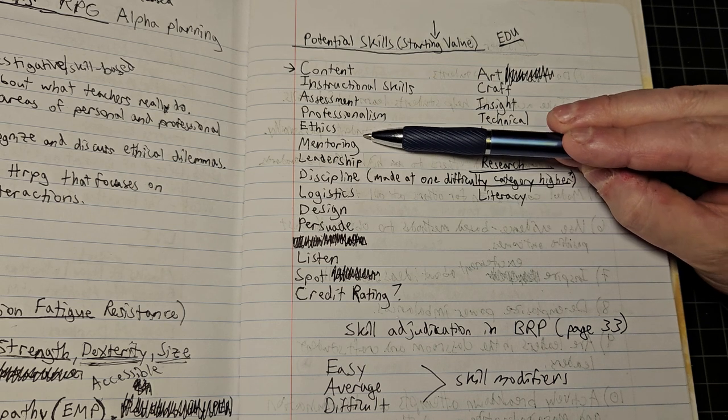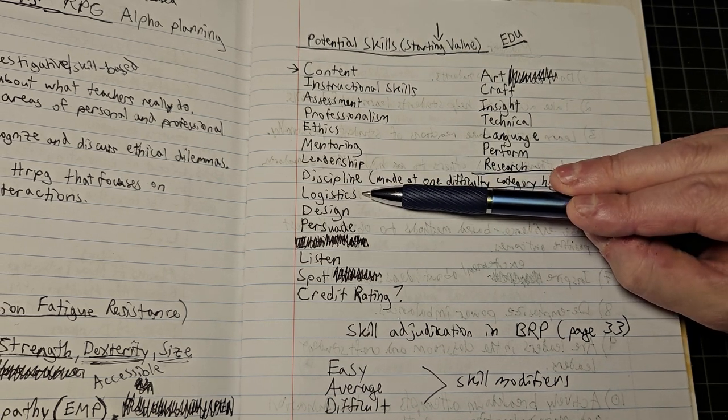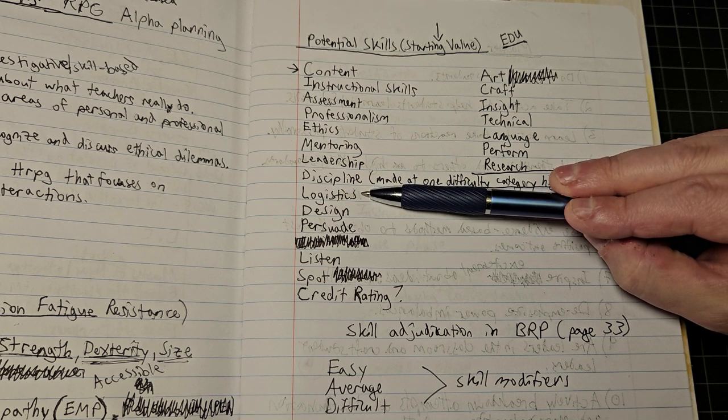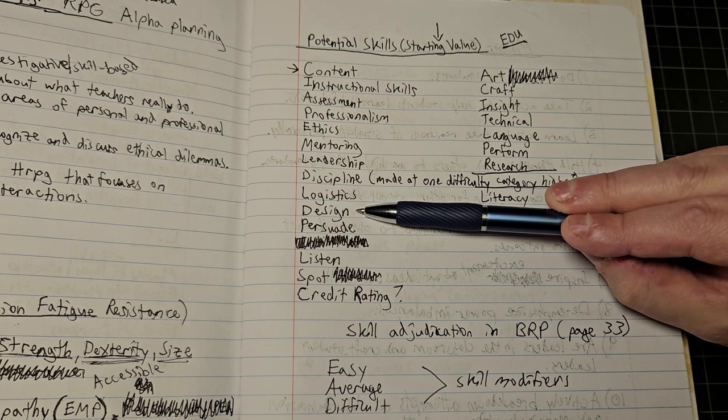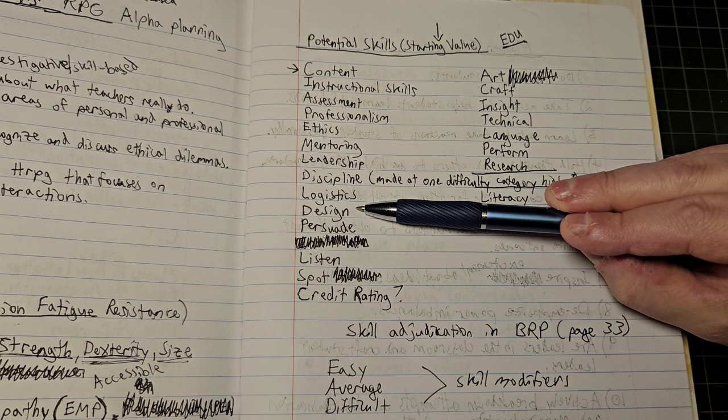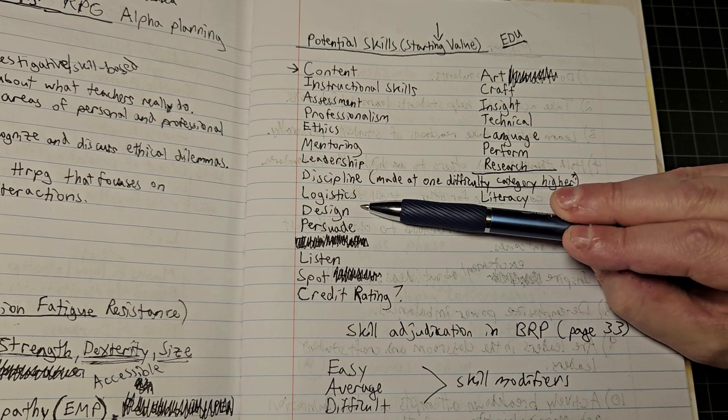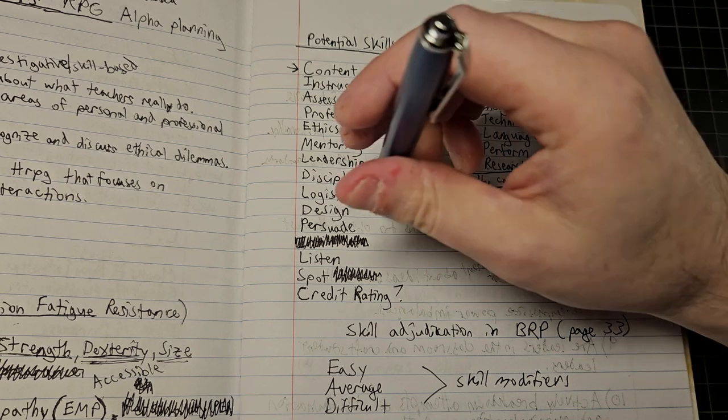Logistics is a critical aspect of education - there's so many ducks that need to be put in a row, so many rules that need to be lined up in order to be effective. Design - designing curricula and designing instruction are critical parts of education.